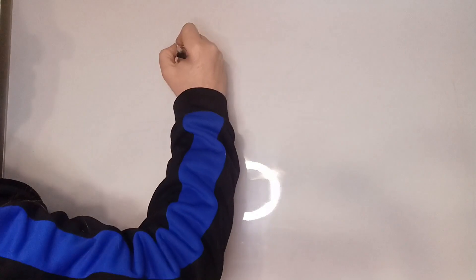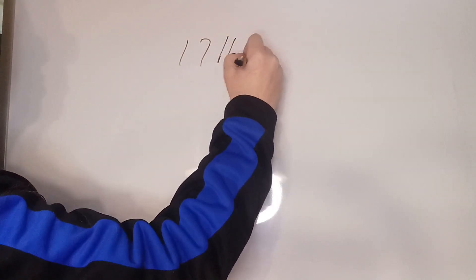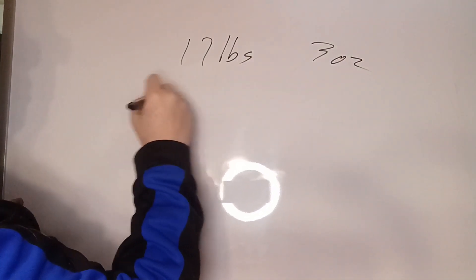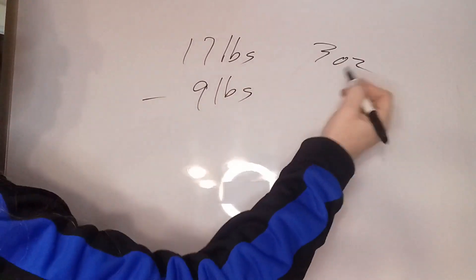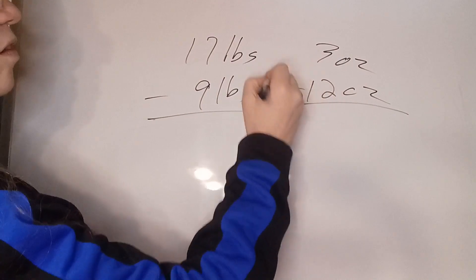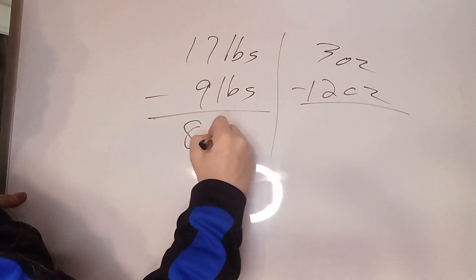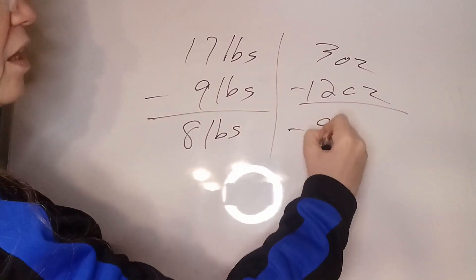One last one. Let's take 17 pounds, three ounces, minus nine pounds, 12 ounces. 17 minus nine is eight pounds. Three minus 12 is minus nine ounces.